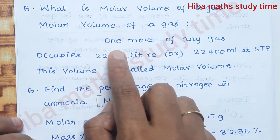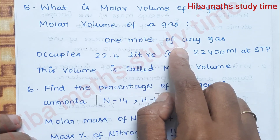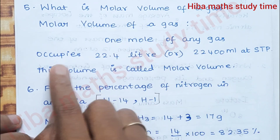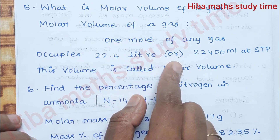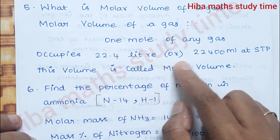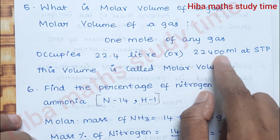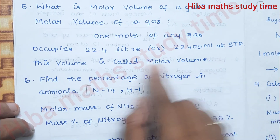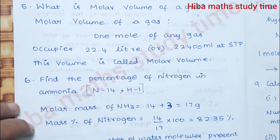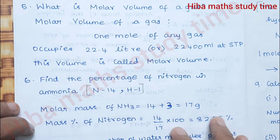What is the molar volume of a gas? One mole of any gas occupies 22.4 liters or 22,400 ml at STP. This volume is called molar volume.